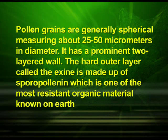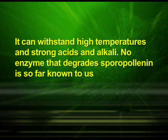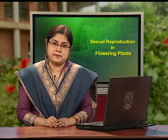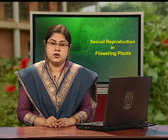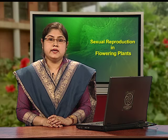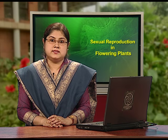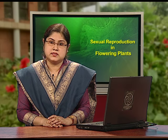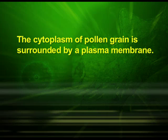Pollen grains are generally spherical, measuring about 25 to 50 micrometers in diameter, and have a prominent two-layered wall. The hard outer layer called the exine is made up of sporopollenin, which is one of the most resistant organic materials known on earth. It can withstand high temperatures and strong acids and alkali, and no enzyme that degrades sporopollenin is so far known. At certain places the exine is absent or very thin, giving an appearance of a pore called the germ pore — generally three in dicots and one in monocots. The inner wall is called the intine, a thin and continuous layer made up of cellulose and pectin. The cytoplasm of the pollen grain is surrounded by a plasma membrane.